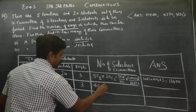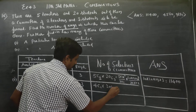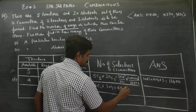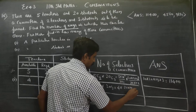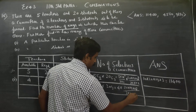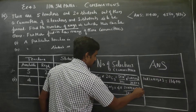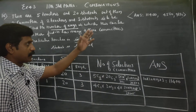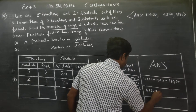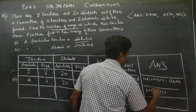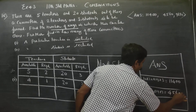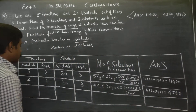1 teacher is already included, so it is 4C1 into 20C3. 4C1 is 4, and 20C3 is 20 into 19 into 18 by 3 into 2 into 1. After cancellation, you get 4 into 20 into 19 into 3, giving the second answer: 4560.